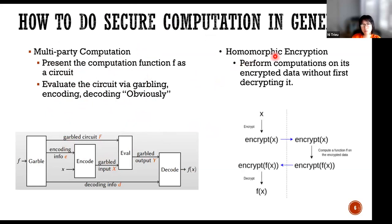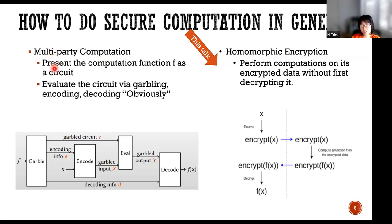Another technique is homomorphic encryption — it's a kind of encryption, but it allows you to do computation on encrypted data. This talk focuses on homomorphic encryption, so you might not care about the MPC approach. MPC is usually efficient but not easy to understand. Homomorphic encryption has a very simple concept and can be used by non-experts. That's why we chose homomorphic encryption to implement secure computation for wastewater data.